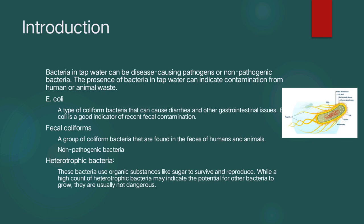There are many kinds of tap water bacteria, a few of which are E. coli and fecal coliforms. E. coli is a type of coliform bacteria that can cause diarrhea and other gastrointestinal issues. Fecal coliforms are a group of coliform bacteria that are found in feces of humans and animals.